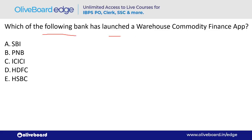Which bank launched a Warehouse Commodity Finance app? The answer is HDFC Bank — option T (D). SBI is headquartered in Mumbai, PNB in New Delhi, ICICI in Mumbai, HDFC in Mumbai, HSBC in London.